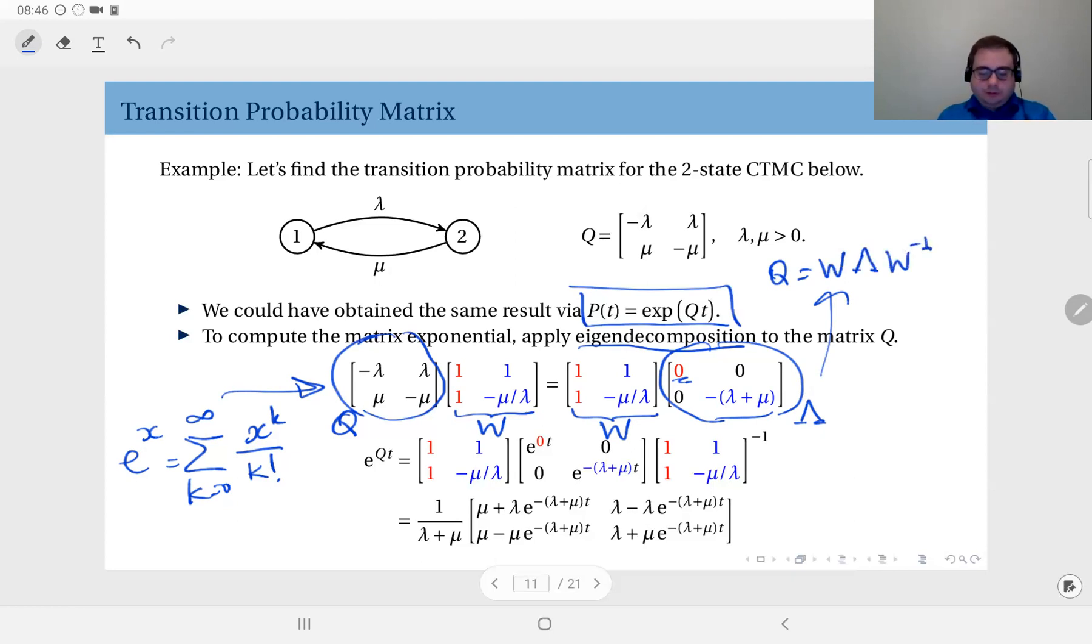So I can also write this as q equals w times lambda times w inverse. And you see, since in the Taylor series expansion of the exponential function, this, by the way, also applies to matrices.